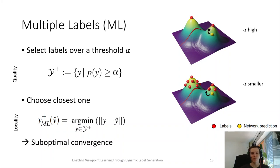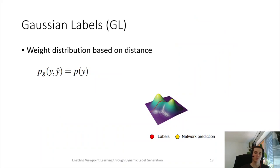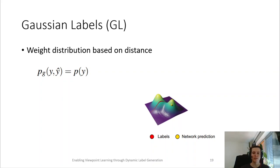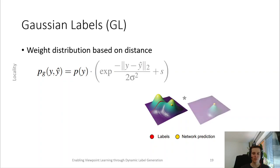To overcome this problem, we present a second approach, which we call Gaussian labels. The idea behind this is to weight the label distribution based on the distance to the current prediction. For this, let's consider the label distribution. Now, we first evaluate the network to get an initial prediction, again indicated in yellow, and now we multiply the distribution with a Gaussian function centered at the current network prediction, thus enforcing a locality.